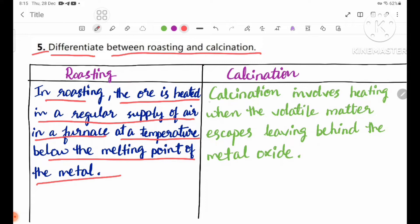Calcination involves heating when the volatile matter escapes, leaving behind the metal oxide.